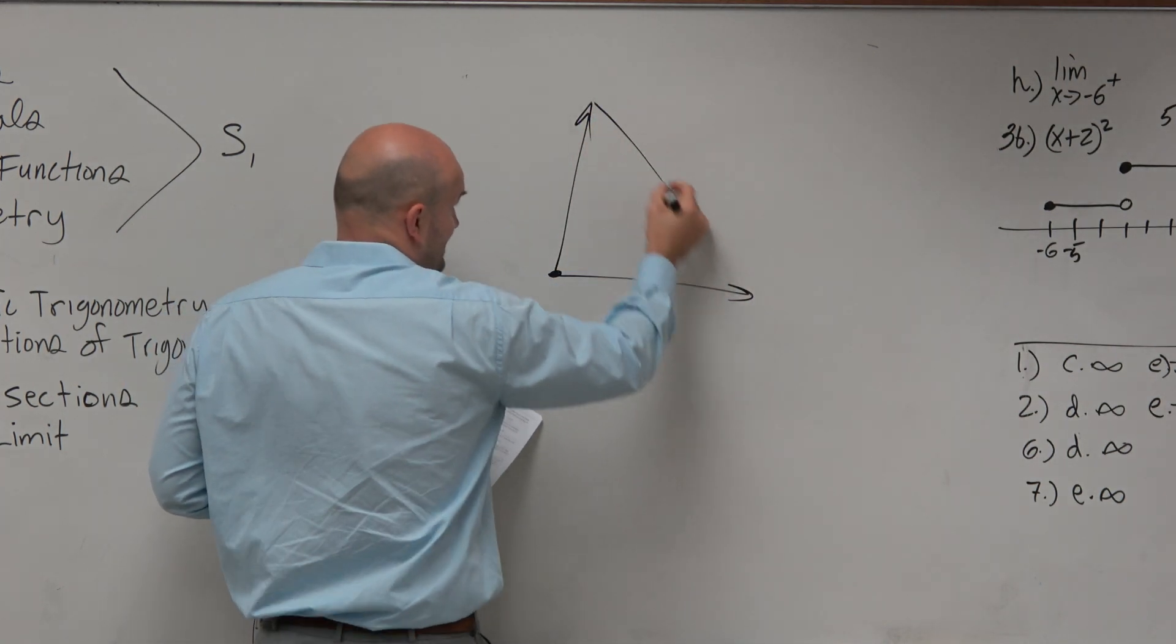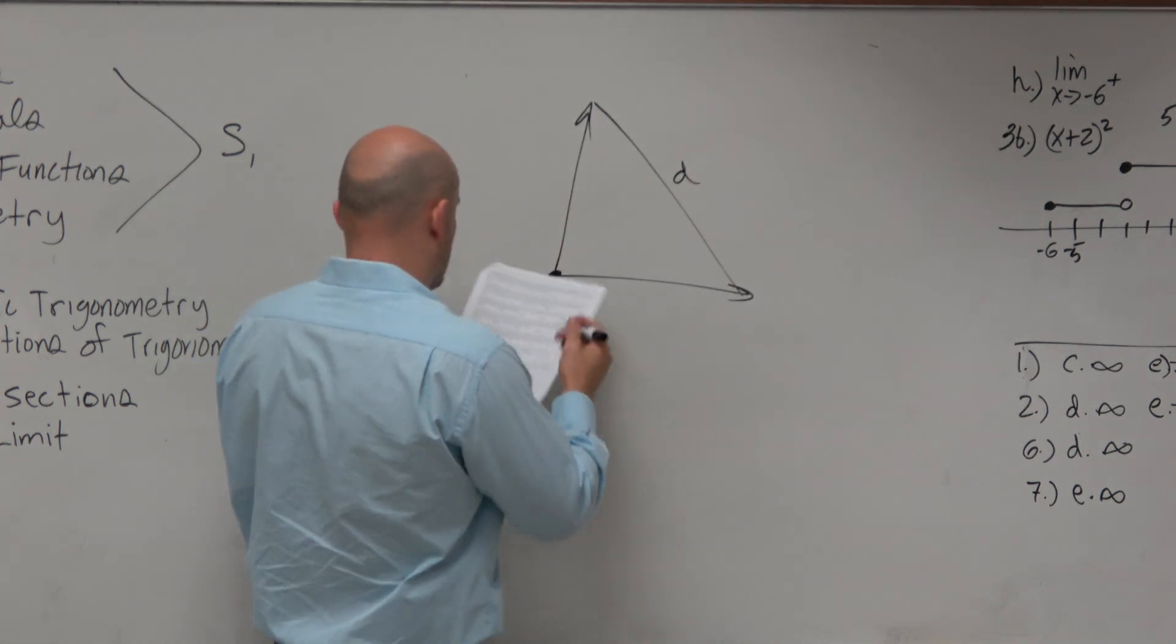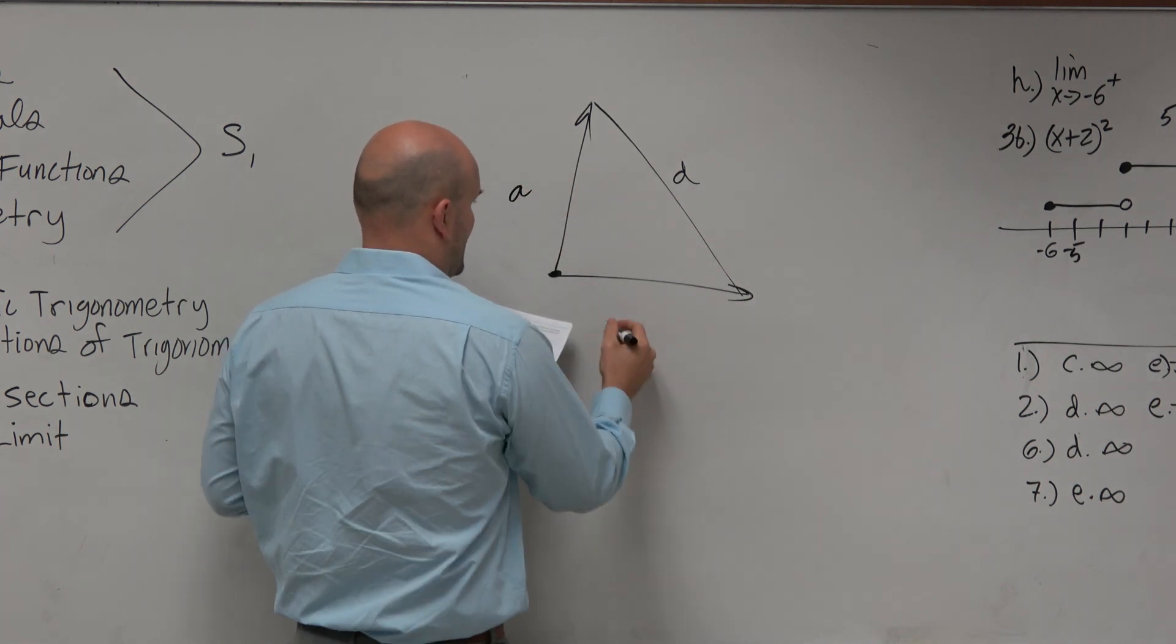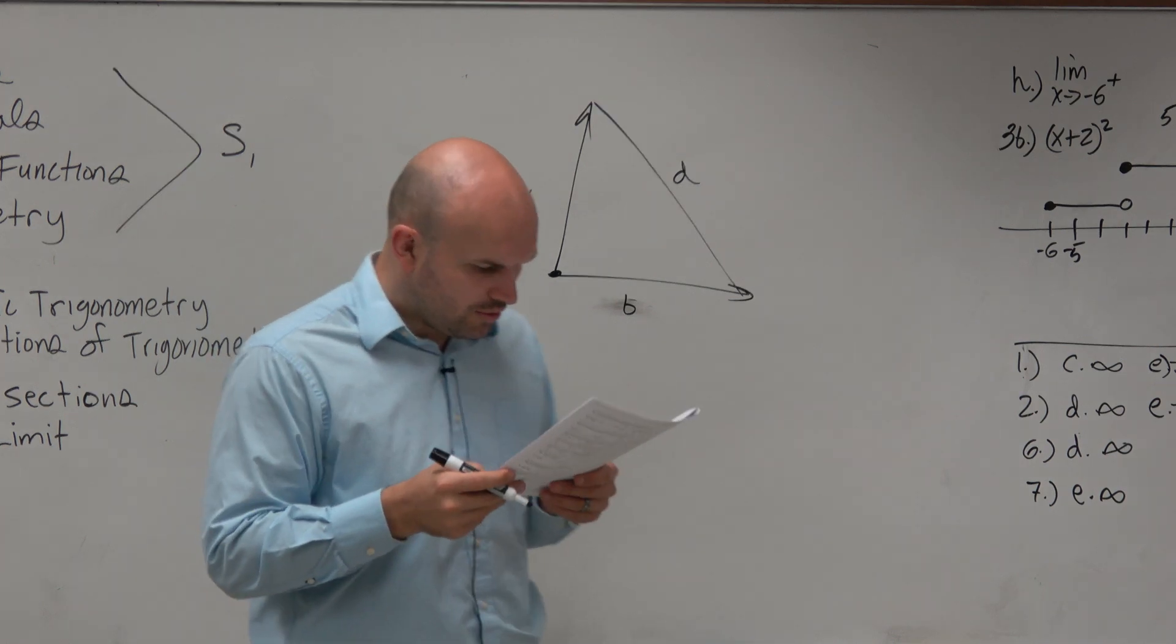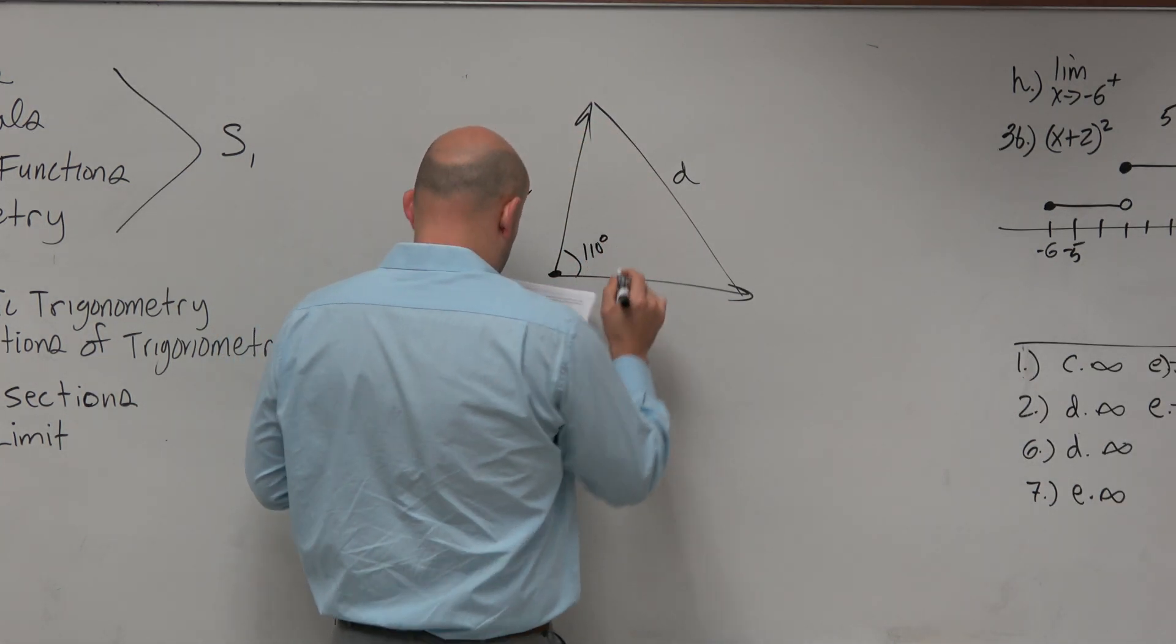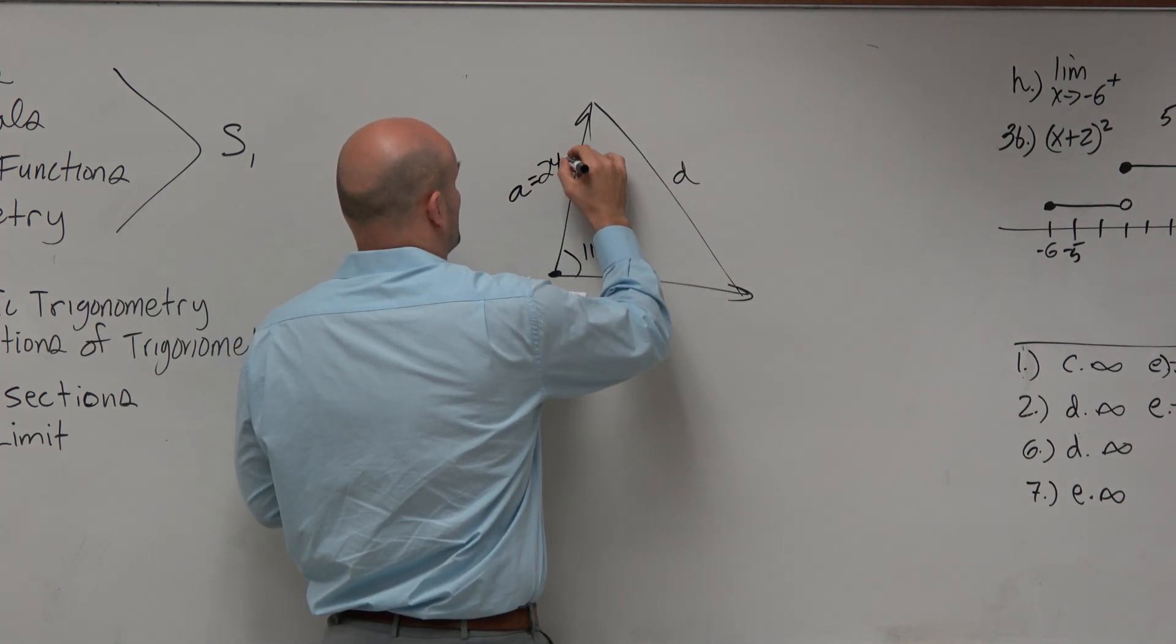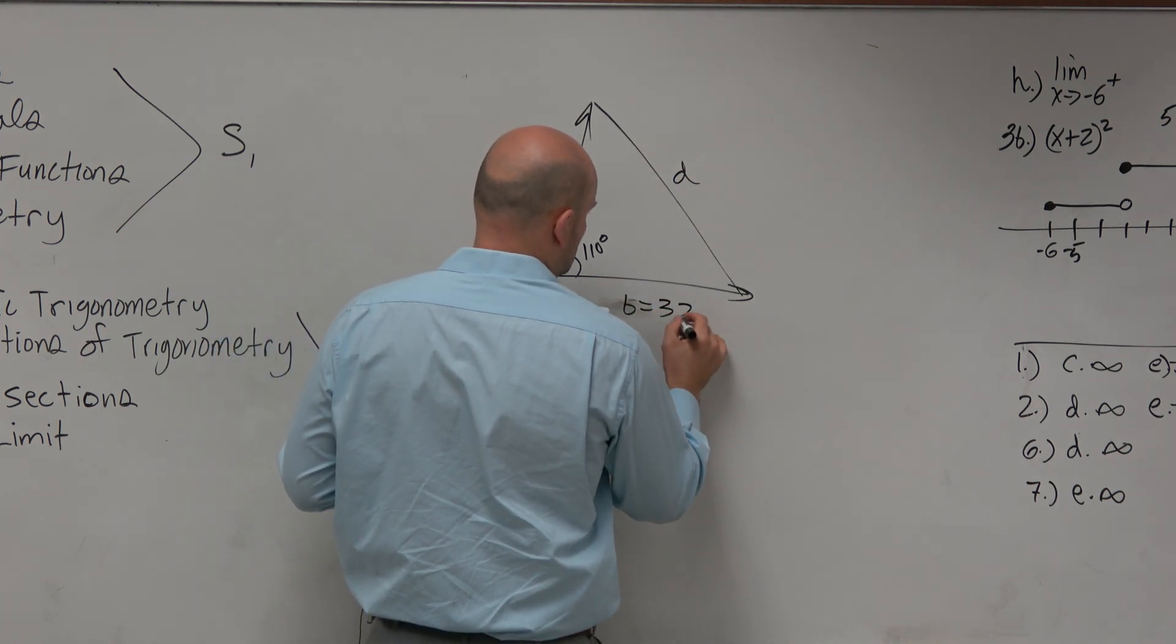Our answer is going to be here, which is D distance. Let's call them boat A and boat B. So we know the angle is 110 degrees, and we know this one is 24 miles per hour and this one is 32 miles per hour.